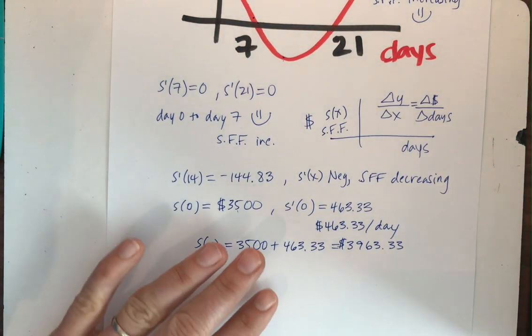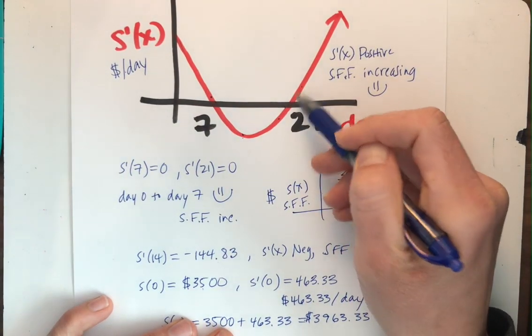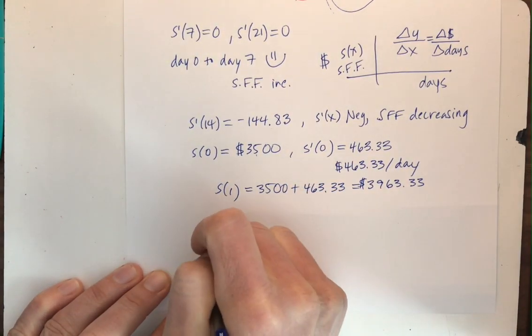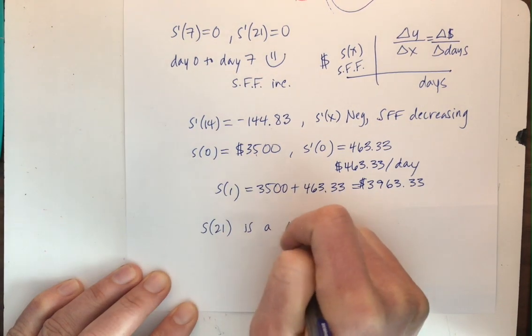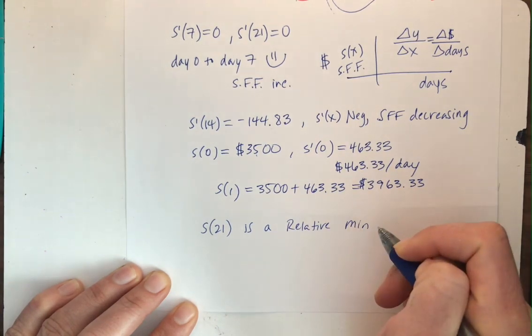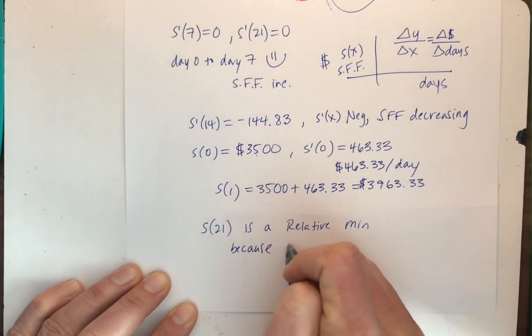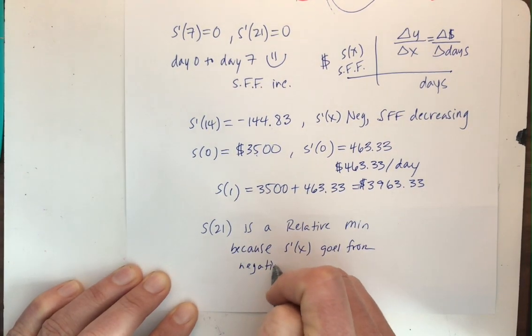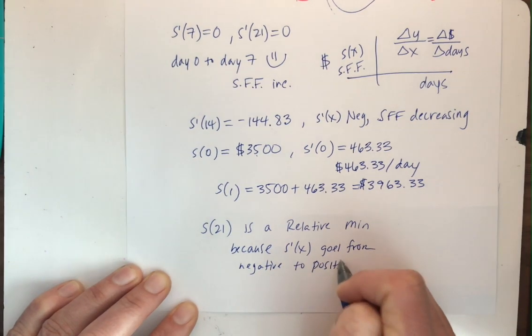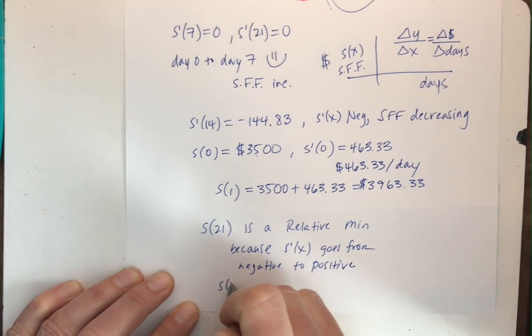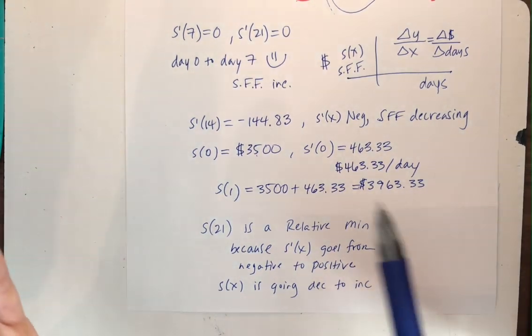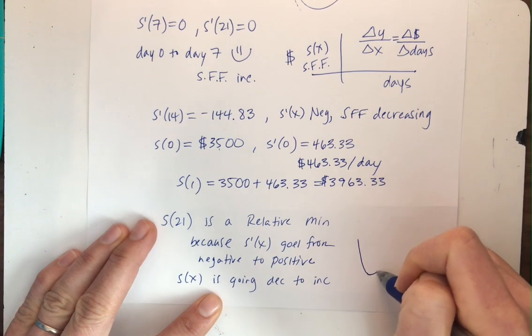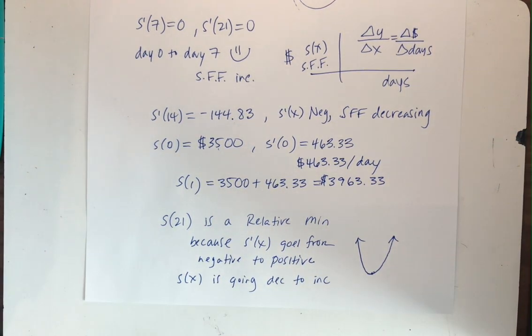So looking at the Sarah Fisher fun graph, where am I going from negative to positive? The 21st day. Okay. So s of 21 is a relative min. Because s prime of x goes from negative to positive. And if it's going from negative to positive, that means s of x is going decreasing to increasing. So decreasing to increasing. Ah. That definitely looks like a relative min.